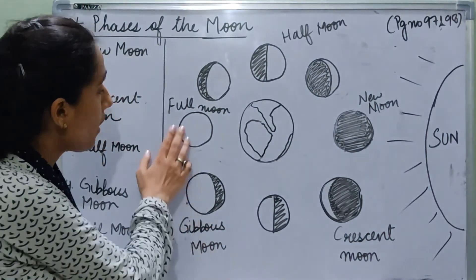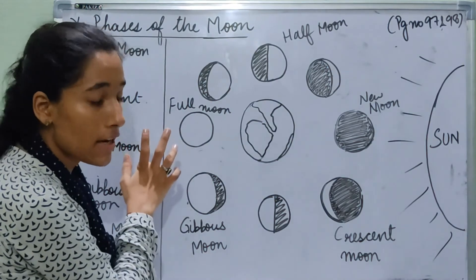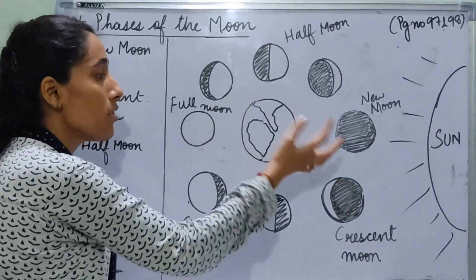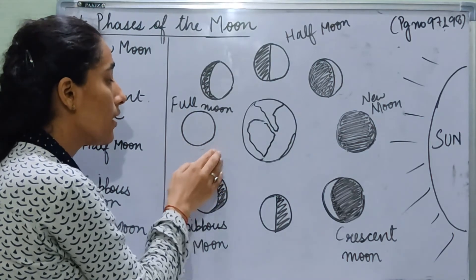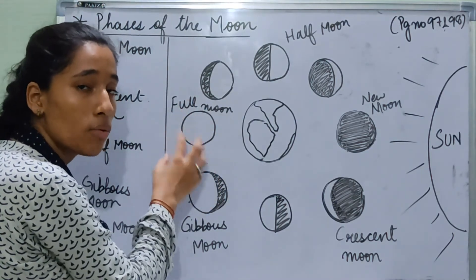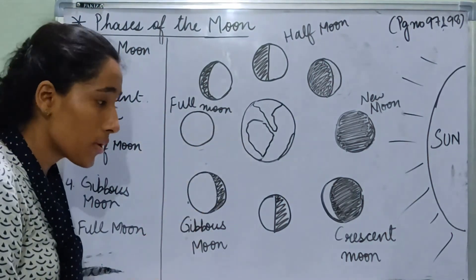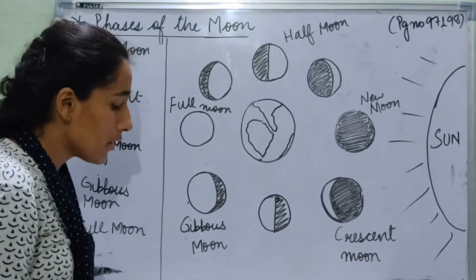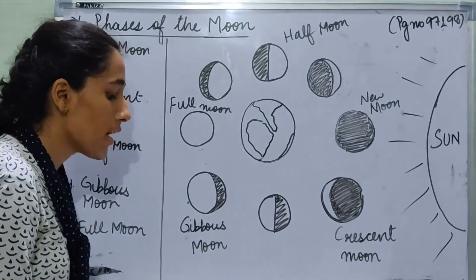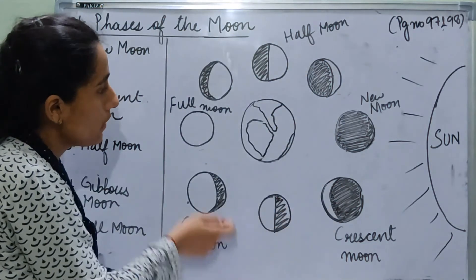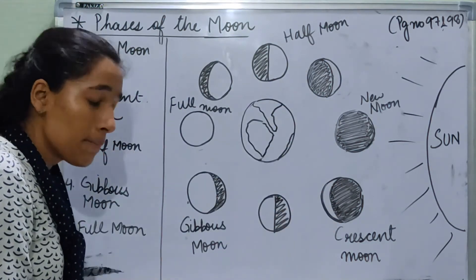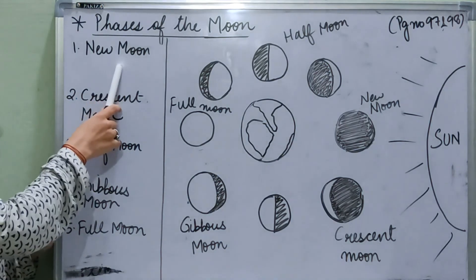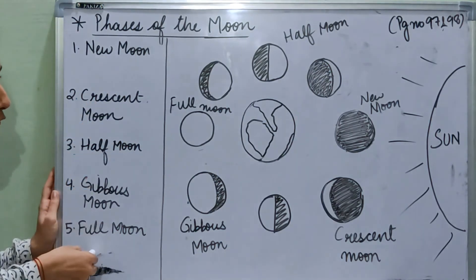Full moon is when the entire portion of the illuminated side of the moon faces towards the earth, and we can see the perfectly round moon. The complete illuminated part can be seen from the earth, so it is known as a full moon. The phases of the moon reverse after the full moon. The time period between two full moons is about 29.5 days. The phases of moon are: new moon, crescent moon, half moon, gibbous moon, and full moon.